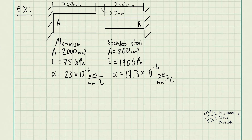At room temperature, or 20 degrees Celsius, a 0.5 millimeter gap exists between the ends of the rods as shown in the image. At a later time when the temperature has reached 140 degrees Celsius, we need to determine: (a) the normal stress in the aluminum rod, and (b) the change in length of the aluminum rod. Rod A is made of aluminum — we have the cross-sectional area, modulus of elasticity, and coefficient of thermal expansion, which is 23 times 10 to the negative 6 millimeter per millimeter per degree Celsius.